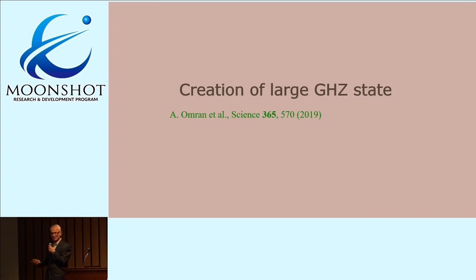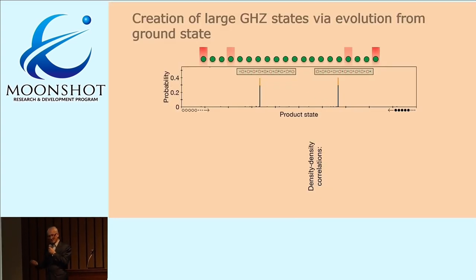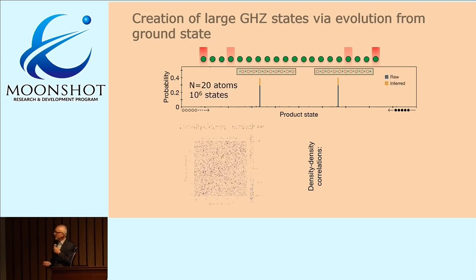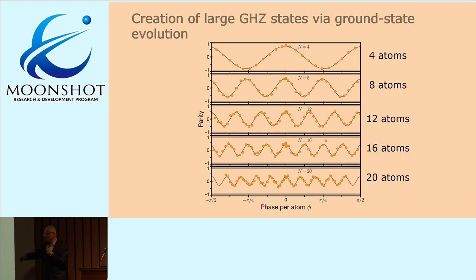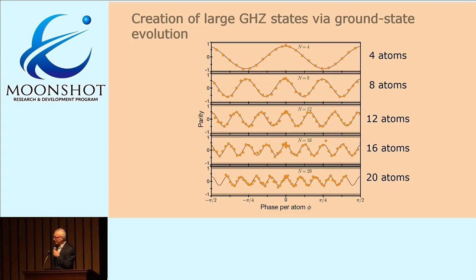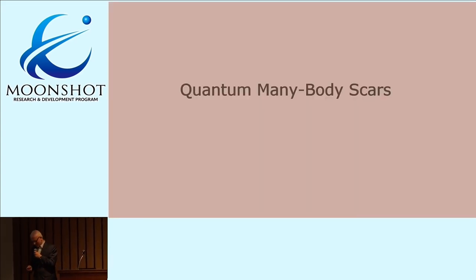We also, at the time, created the larger GHZ state, which was 20 atoms. By now, I think the record is 20 something in superconducting systems. This was done in a 1D chain. There, because it was 1D, the edges were special. So we had to do special light shift tricks in order to improve the preparation. Basically, here you see density-density correlations across the whole system. We saw basically this collective flopping at a faster phase evolution rate up to 20 atoms.